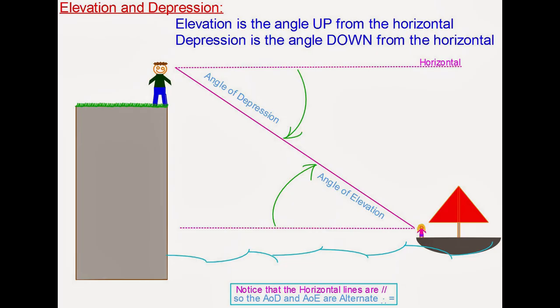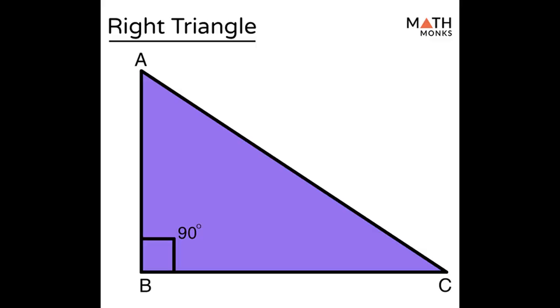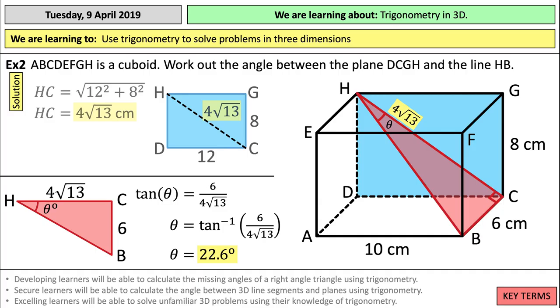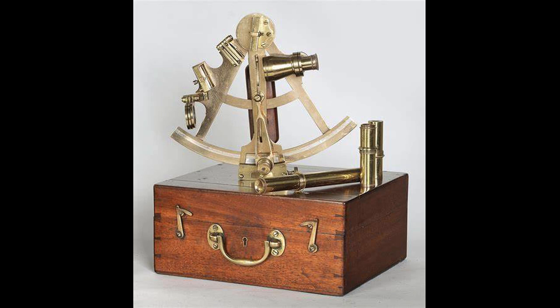You don't need an elevation angle for celestial navigation, nor do you need a triangle, nor any trigonometry. You don't even need a sextant.